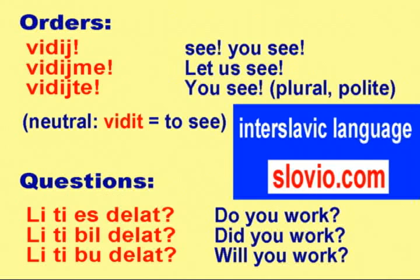Orders (imperatives): VIDII, VIDIME, VIDITE. Questions: LI TI ES DELAT, LI TI BIL DELAT, LI TI BU DELAT.